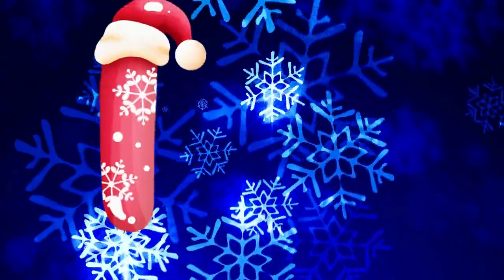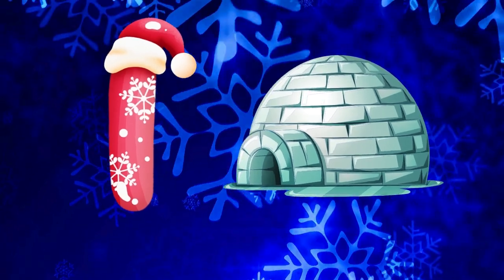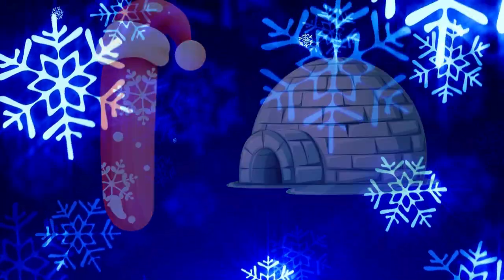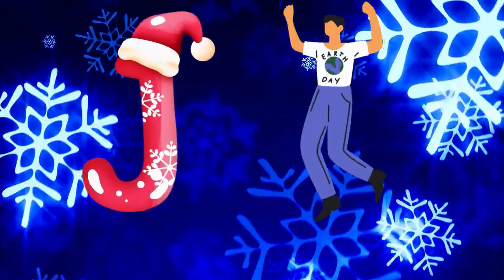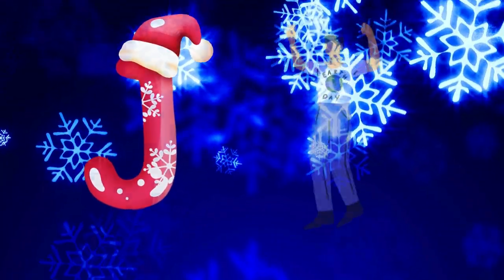I is for igloo, i-i-igloo. J is for jump, j-j-jump.